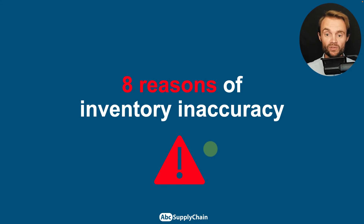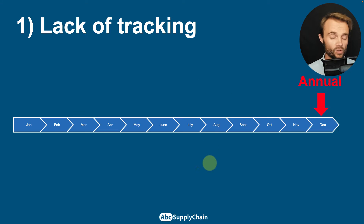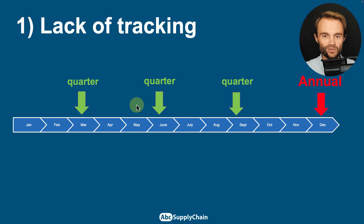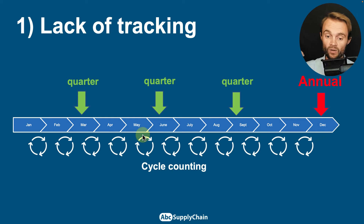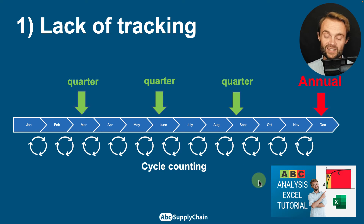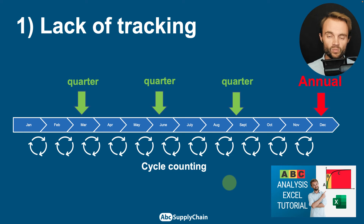Now I'll give you eight reasons for inventory inaccuracy. The first one is lack of tracking. Most companies only track inventory accuracy for fiscal reasons — at the end of the fiscal year in December or May/June. This is not enough. I recommend doing it once per quarter or twice a year. I also recommend implementing what I call cycle counting — a process of continuously checking your inventory on the most important products. You can combine this with an ABC analysis. If you want to know more about the stock-taking process and how to improve it, let me know in the comments.